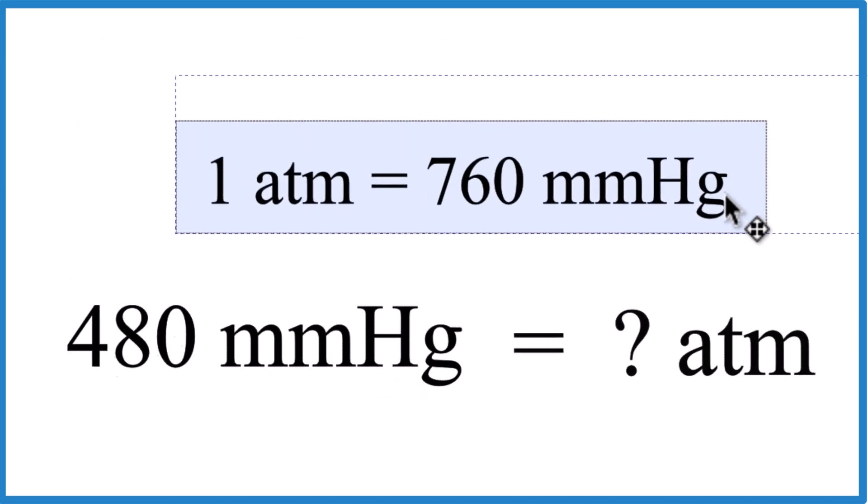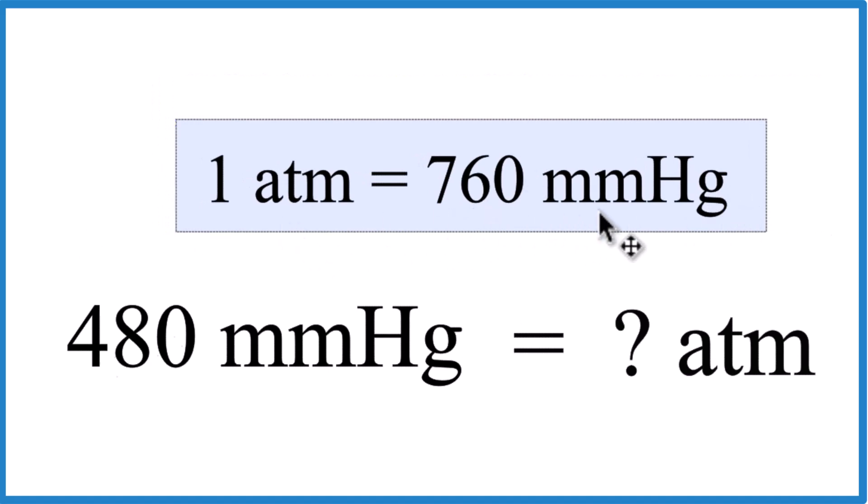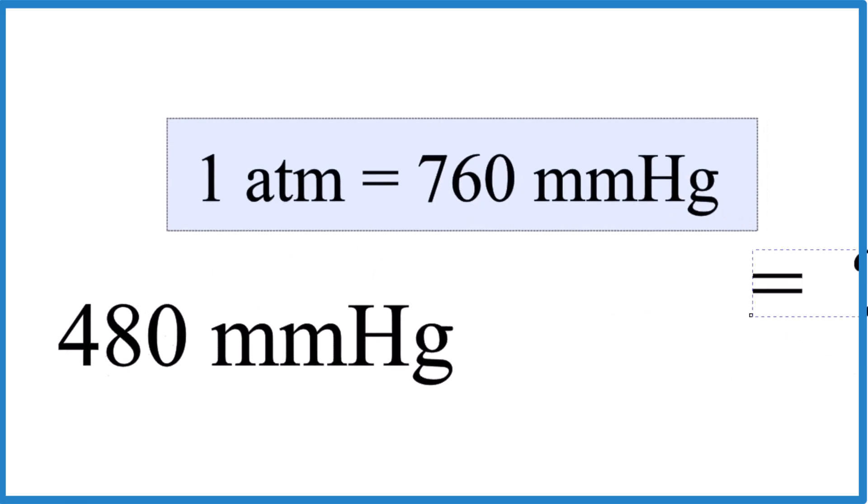And the conversion factor is one atmosphere, that equals 760 millimeters of mercury. So we're going to multiply 480 millimeters of mercury times our conversion factor here.